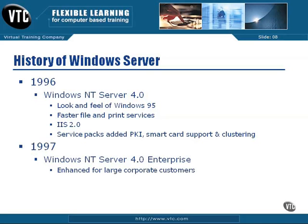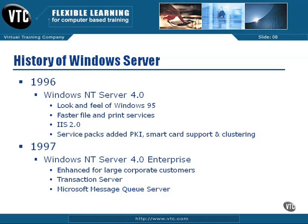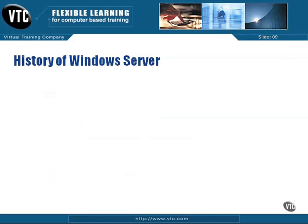In 1997, NT Server 4.0 Enterprise came out, and this was an enhanced version for large corporate customers. It introduced Transaction Server, which was an outgrowth of the Internet influence, because now we needed to take multiple actions, group them as one, and have them succeed or fail together. Message Queue Server was another addition, because our programs couldn't assume constant access — we might be going across a wide area network link or an Internet connection that may not be connected all the time.